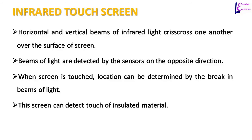Infrared touch screens project horizontal and vertical beams of light that crisscross one another over the surface of the screen. These beams of light are detected by sensors on the opposite sides. When the screen is touched, the location can be determined by the breaks in the beam of light. This screen can also detect touch of insulated material.